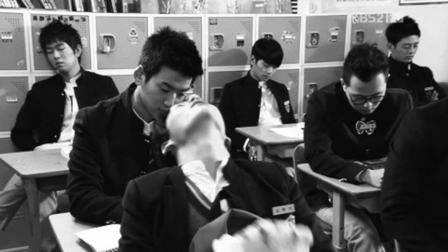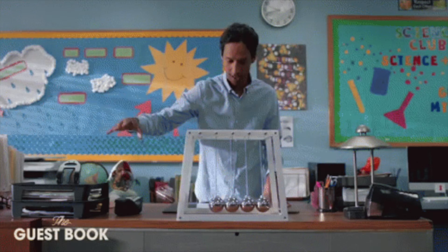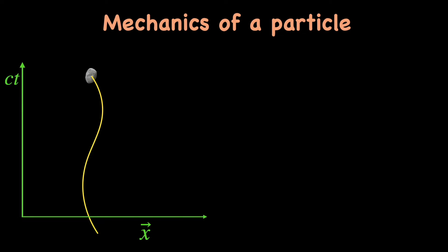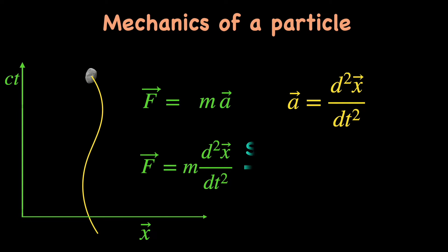We know this from high school level physics, right, that a force acting on a particle makes it accelerate. As per Newton's second law, the force is equal to the particle's mass times acceleration. This equation is then cast as a differential equation by using the definition of acceleration, which is the second order time derivative of the particle's position vector. Then we solve this differential equation to express the particle's position vector as a function of time.